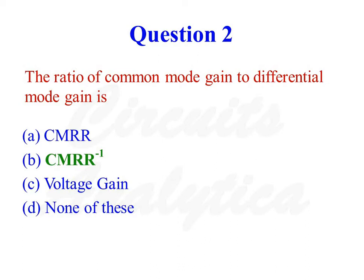CMRR, common mode rejection ratio, is defined as the ratio of differential mode gain to common mode gain. So the correct answer is 1 by CMRR, or CMRR raised to minus 1.